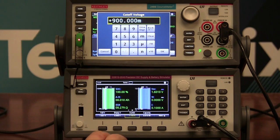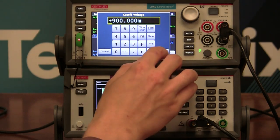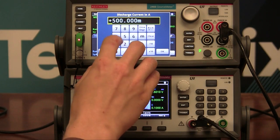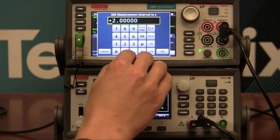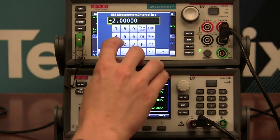The cutoff voltage in this model is 900 millivolts. We're going to discharge at 1 amp.